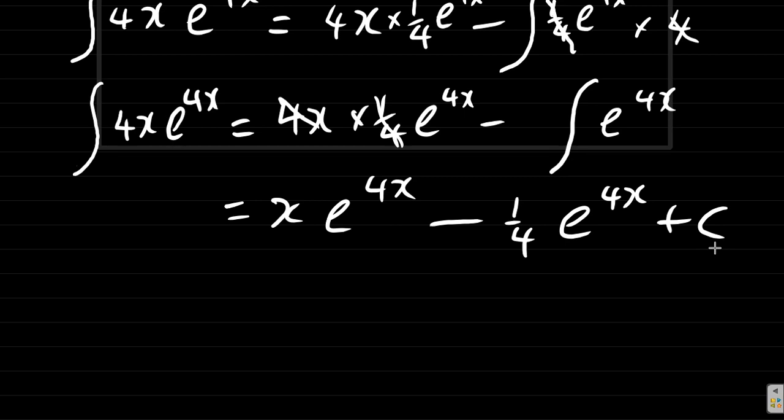So here we have our answer. If you want to, you could put e to the 4x outside the bracket to factorize and get x minus a quarter, plus c.